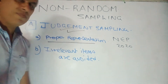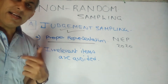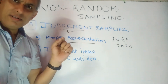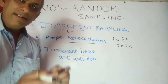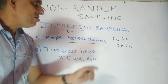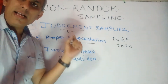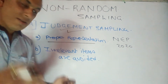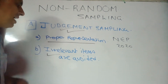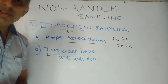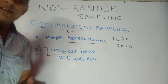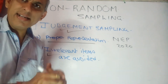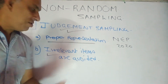The sample is decided on the basis of the judgment of the investigator. It's a very good method because it gives proper representation — the sample is chosen from people who really have knowledge about the field and represent the properties of the topic in a justified manner. Irrelevant items are not included. That is what judgment sampling is all about.